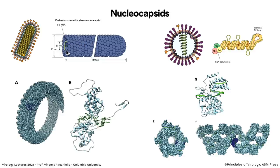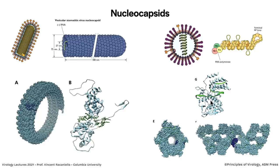The nucleocapsid is the RNA-protein complex — a substructure within the particle. For VSV, an envelope virus, it's a negative-strand RNA wound around a single nucleocapsid protein in a helical structure. Here is the structure of the nucleocapsid protein and the RNA bound to it, including the actual three-dimensional structure showing how one protein subunit in dark blue is wound around in a helix. Influenza viruses also have a nucleocapsid — the polymerase protein and the nucleoprotein as orange spheres wrapped around the RNA, very much like the VSV situation.